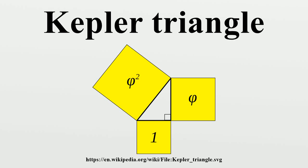A Kepler triangle is a right triangle with edge lengths in geometric progression. The ratio of the edges of a Kepler triangle is linked to the Golden Ratio and can be written as approximately 1, 1.272, and 1.618.